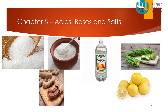Here I have given pictures of different substances on the screen. The first substance is sugar, second is curd, then vinegar, then bitter gourd, tamarind, and lemon. Now let's analyze the taste of these substances. Sugar is sweet. Curd is sour. Vinegar is also sour in taste. Bitter gourd is bitter in taste. Tamarind is also sour, and lemon is also sour in taste.